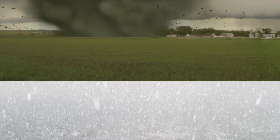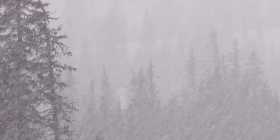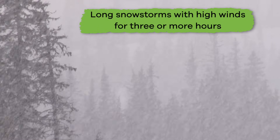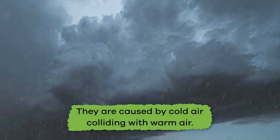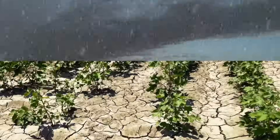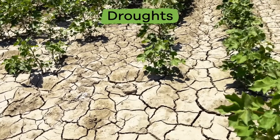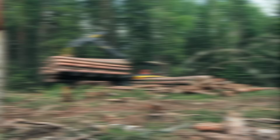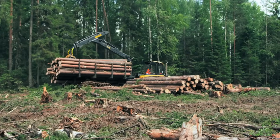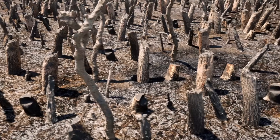So let's learn a little more about ten of the most common natural disasters and their causes, starting with blizzards. Blizzards are long snowstorms with high winds for three or more hours. They are caused by cold air colliding with warm air. Droughts are another type of natural disaster caused by lack of rain over a long period of time. Human activity, like deforestation, can lead to droughts.